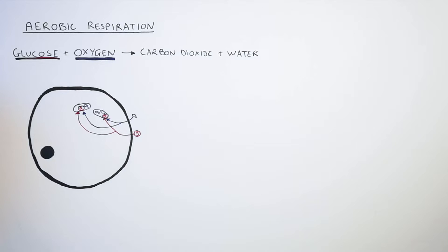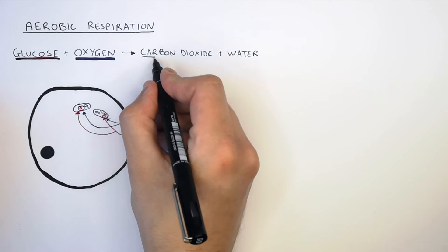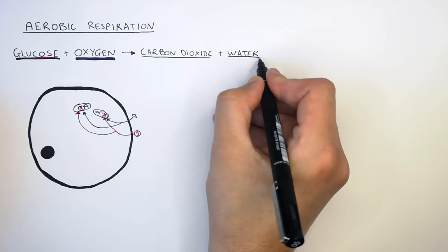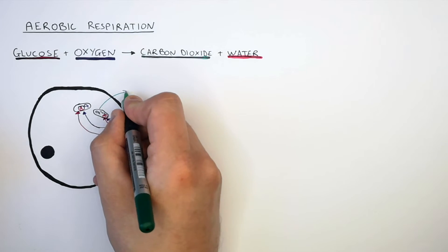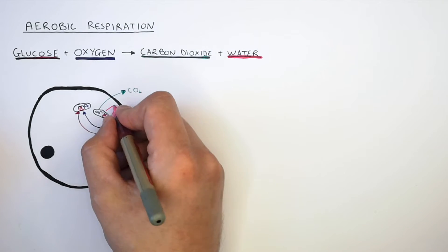This will then form two byproducts. These byproducts are carbon dioxide and water. The carbon dioxide and water both leave the cell.